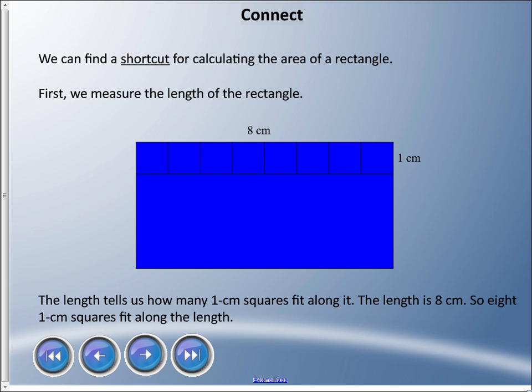So the first thing we need to do is measure the length of the rectangle. I have eight centimeters going across, and they're one wide on that top row. The length tells us how many one centimeter squares fit along it. The length is eight centimeters, so eight one centimeter squares fit along the length. So from here to here is eight centimeters - I can tell because I have one, two, three, four, five, six, seven, eight one centimeter squares going across.